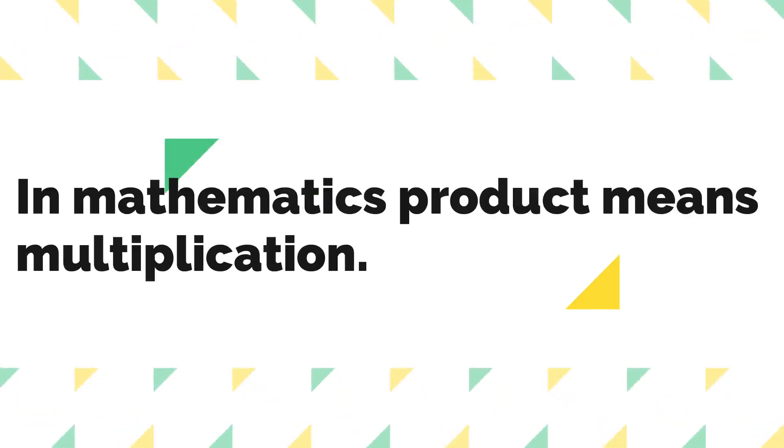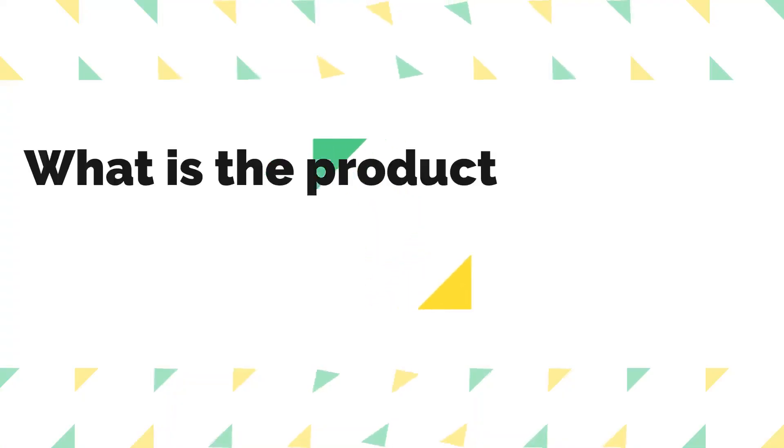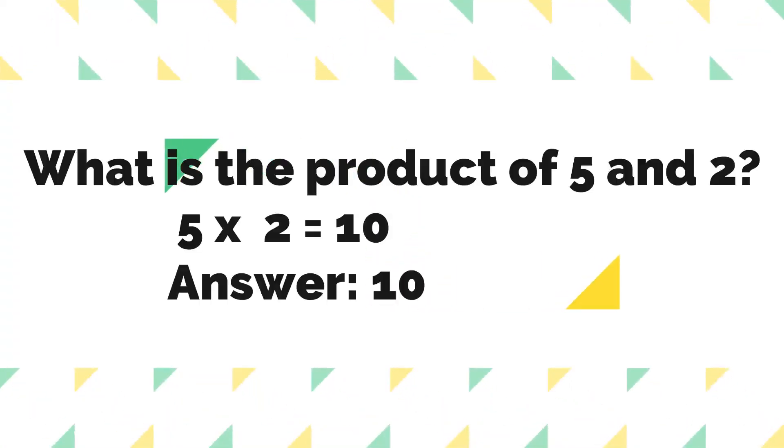For instance, when asked what's the product of five and two, it simply means five multiplied by two, or five times two, and five times two equals ten. Also, when asked what's the product of three and four, it means three times four, or four times three.